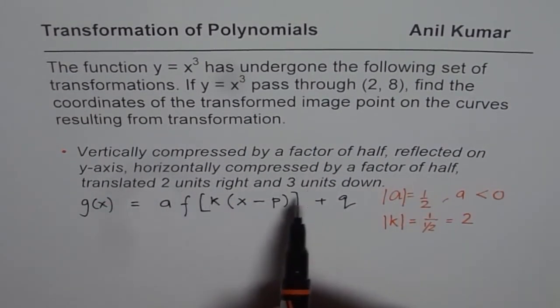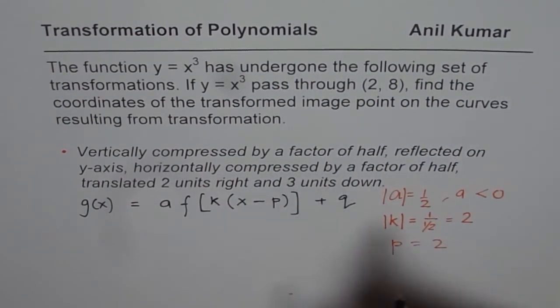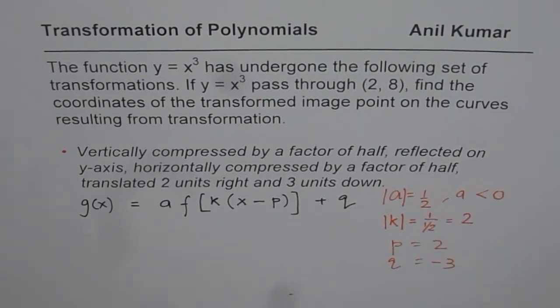Translated 2 units right, so p is 2. 3 units down, q is minus 3. So we'll substitute these values and get our function.